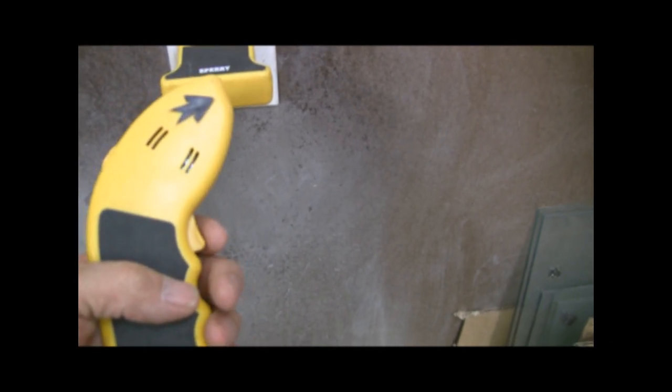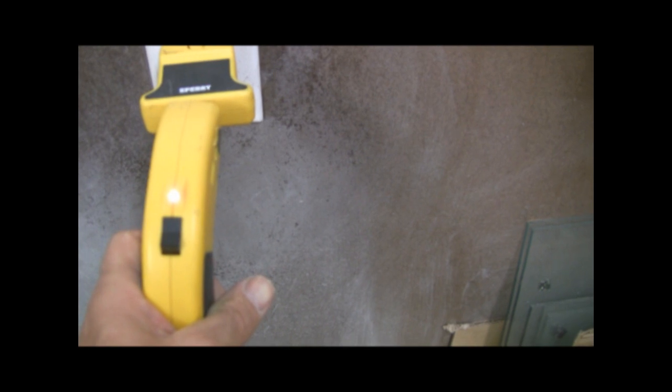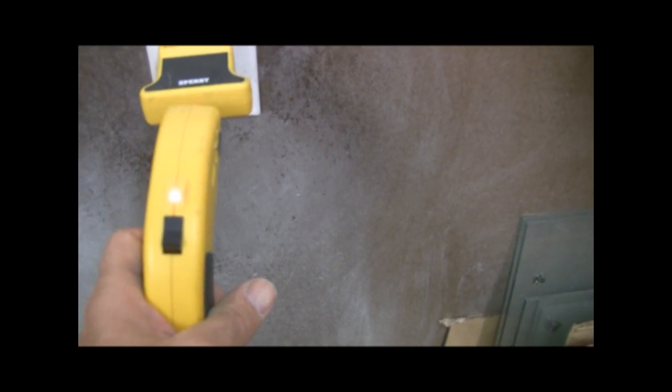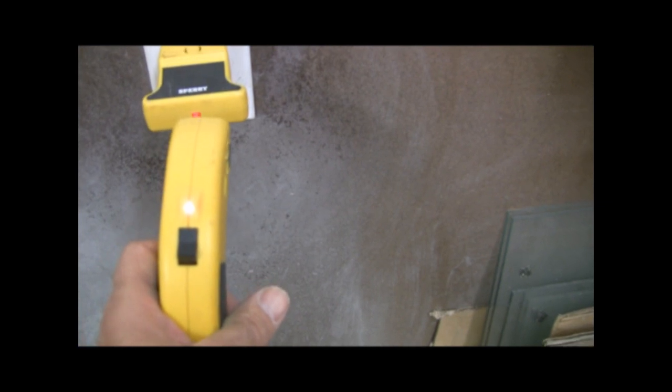There's a little trigger on the end down here. You just pull that trigger in and now it stopped beeping. Okay it's found its circuit, release the trigger. Now we're going to walk back to the breaker panel and we'll find that breaker and shut it off.